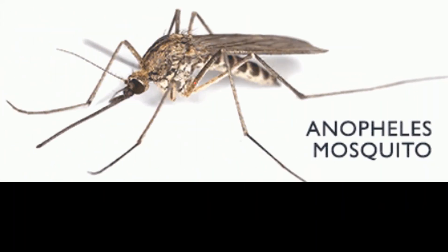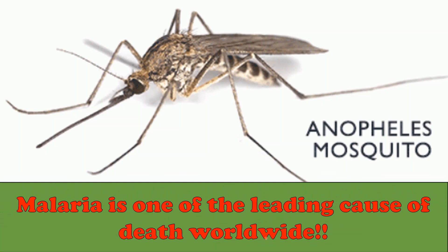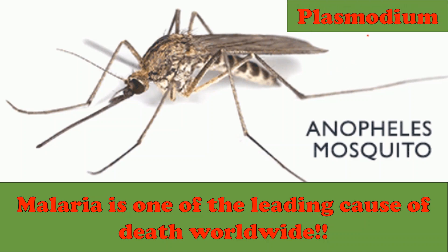There are also well-known examples like Malaria. We know that Malaria spreads through female Anopheles mosquitoes and it is one of the leading causes of death in the world. The main causative agent of Malaria is Plasmodium, which is also an example of Protista.